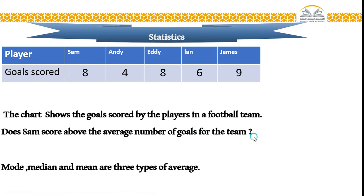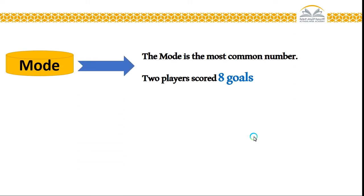Now, mode, median, and mean are types of average. Now, the mode, like I say, the mode is the most common number. Two players scored eight goals. So that is the mode.